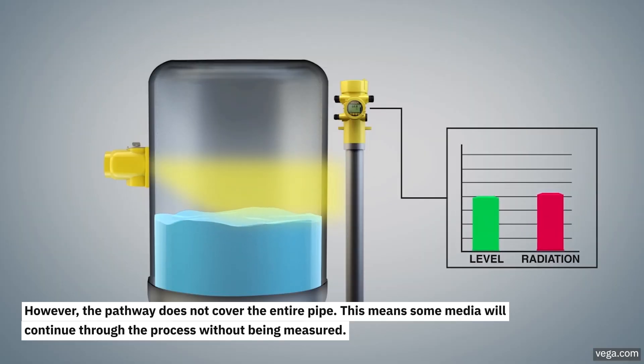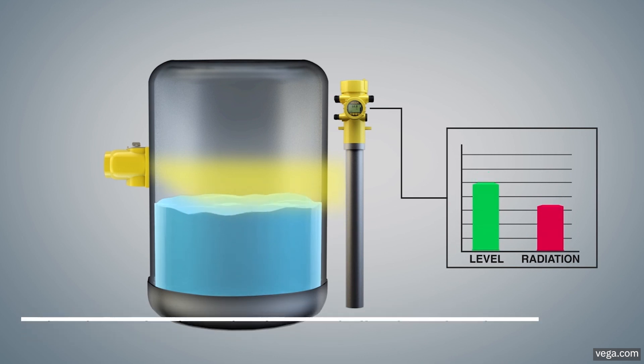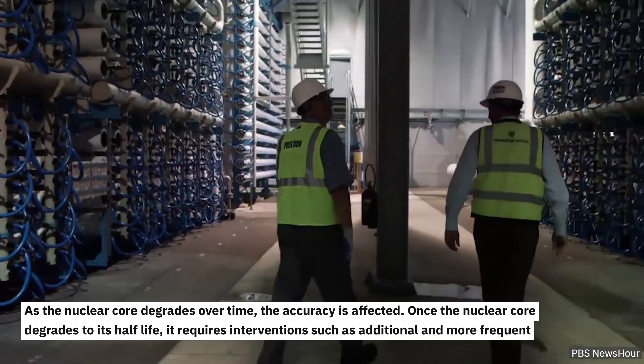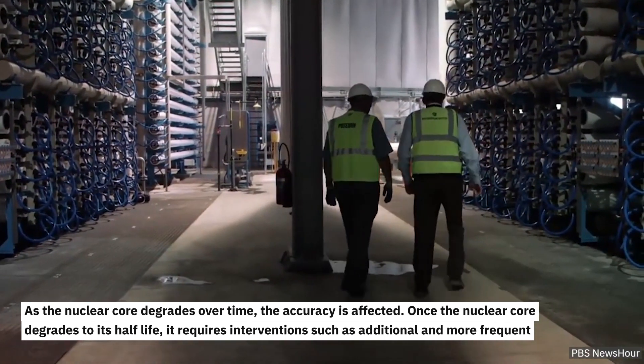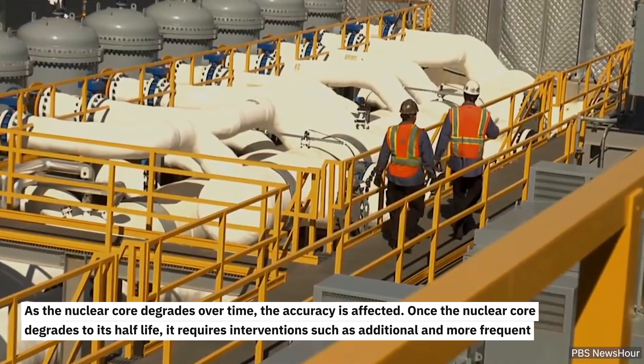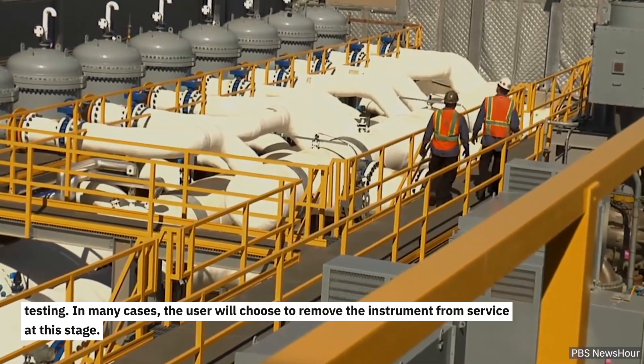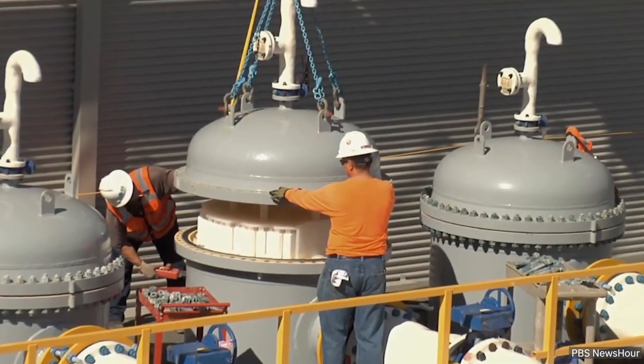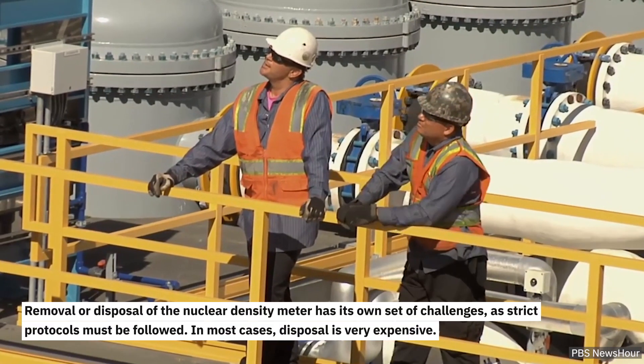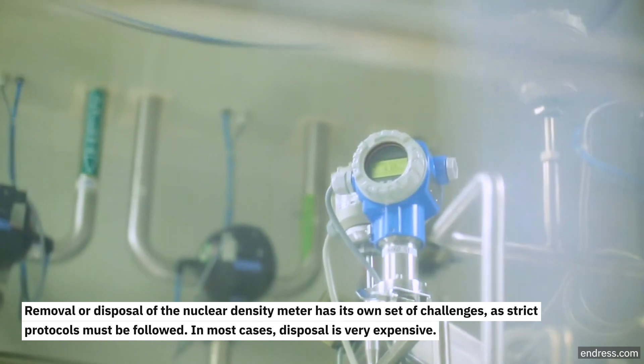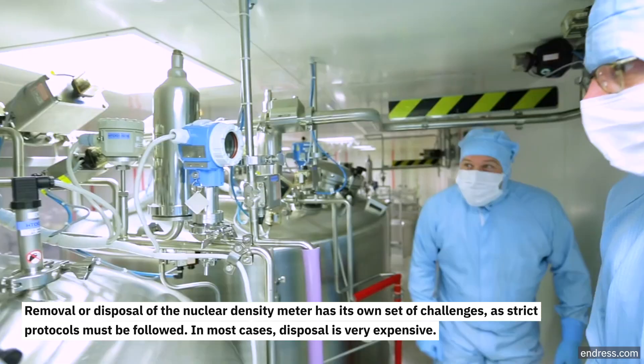As the nuclear core degrades over time, the accuracy is affected. Once the nuclear core degrades to its half-life, it requires interventions such as additional and more frequent testing. In many cases, the user will choose to remove the instrument from service at this stage. Removal or disposal of the nuclear density meter has its own set of challenges, as strict protocols must be followed. In most cases, disposal is very expensive.